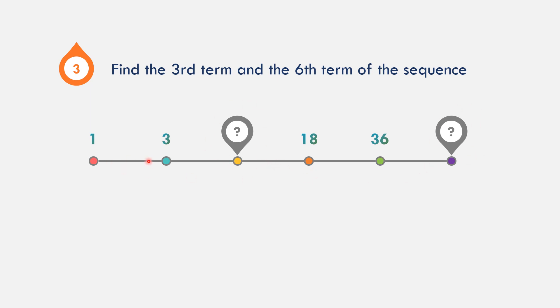1 plus 2 gives 3, correct. But 18 plus 2 cannot continue that way. Let us see what could be the pattern. 1 times 3 is 3 — correct. So if we multiply by 3, we can get 3. How about here?